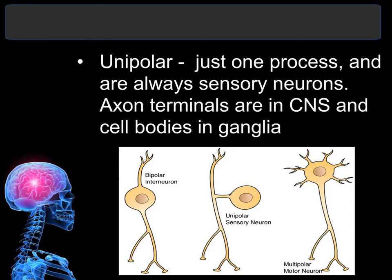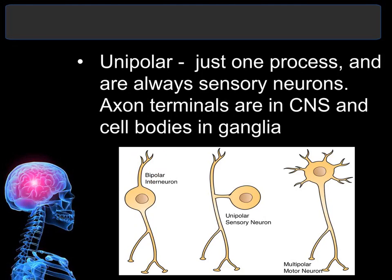Here is a picture of the three types. Notice the reason why it is called bipolar — it has two processes coming off the cell body: one is the dendrite and the other is the axon. Because bipolar neurons only have one dendrite, they can only receive information from one area, though they can send information to multiple other neurons.